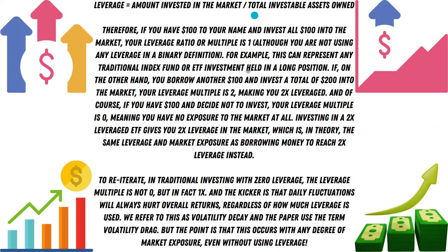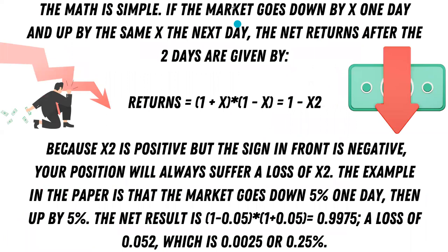To reiterate, in traditional investing with zero leverage, the leverage multiple is not zero but in fact 1x. The kicker is that daily fluctuations will always hurt overall returns regardless of how much leverage is used — we refer to this as volatility decay. This occurs with any degree of market exposure, even without using leverage, because you're going to be 1x and there's always going to be volatility decay. The math is simple: if the market goes down by x one day and up by the same x the next day, the net returns are given by: returns equal (1 + x)(1 − x), which equals 1 − x². Because x² is positive but the sign in front is negative, your position will always suffer a loss of x².